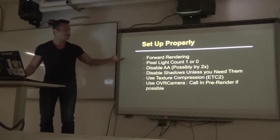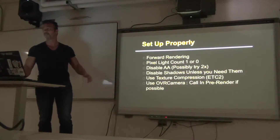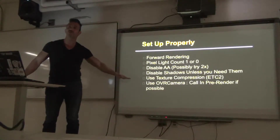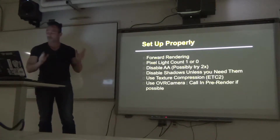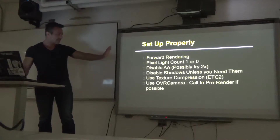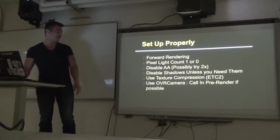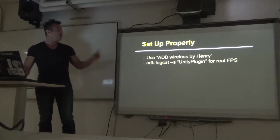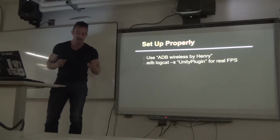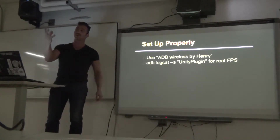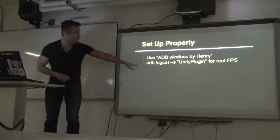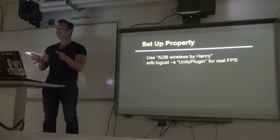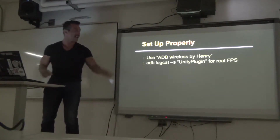Set up properly. In Unity you want to use forward rendering, not deferred rendering. Set pixel light count to one or zero — certain settings will add extra passes to the render and slow things down. No anti-aliasing, no shadows, set up texture compression correctly, and on the OVR camera enable the pre-render checkbox. Also for debugging, there's an app called ADB Wireless by Henry you can get on your Note 4, which lets you get debugging info from the phone onto your computer screen, including frames per second. You want to hit 60.